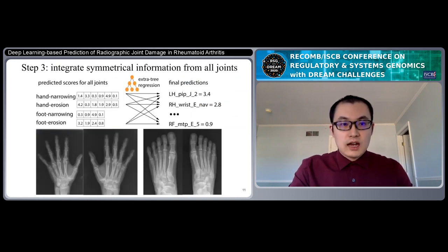At the third step, we collect the predicted scores for all joints and use them as the input features for a gradient tree regression model to make the final prediction for each joint. And then in this step, the symmetric information will be learned automatically by this model.